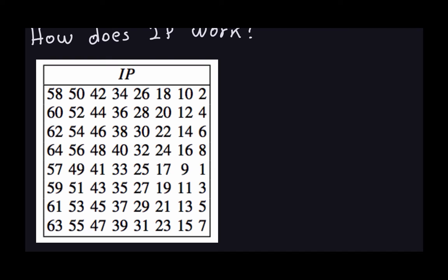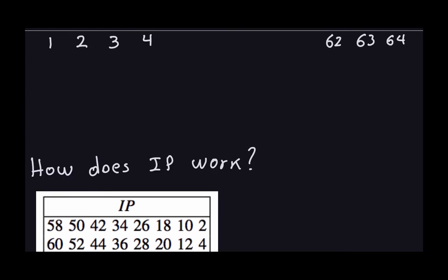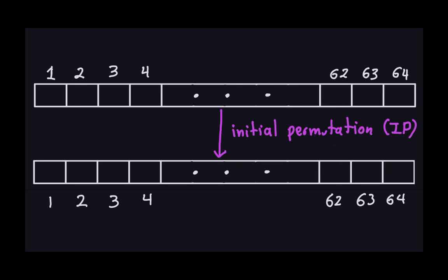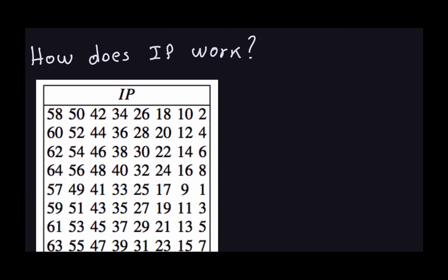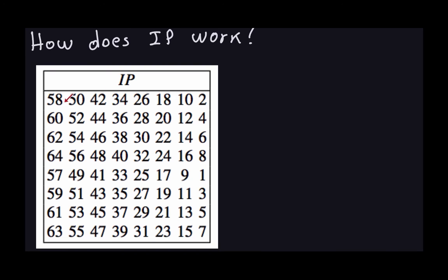Reading the table left to right, top to bottom: the first number is 58, which means the bit in position 58 will be transformed into position 1. Similarly, the bit in position 50 will be transformed into position 2.